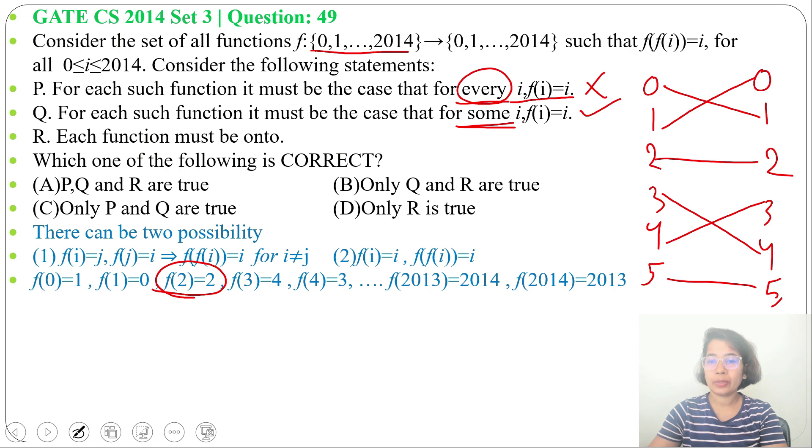domain and codomain both are same. Both contain the same numbers. It's a function to itself. Both domain and codomain cardinality is same, both cardinality is 2015.